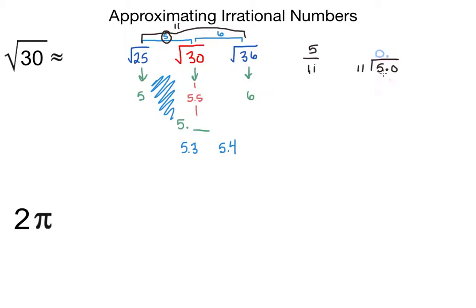It doesn't go into five so we go zero there. 11 goes into 50 four times, and that is 44. If we do some subtraction we'll get 50 minus 44 is six, annex another zero.